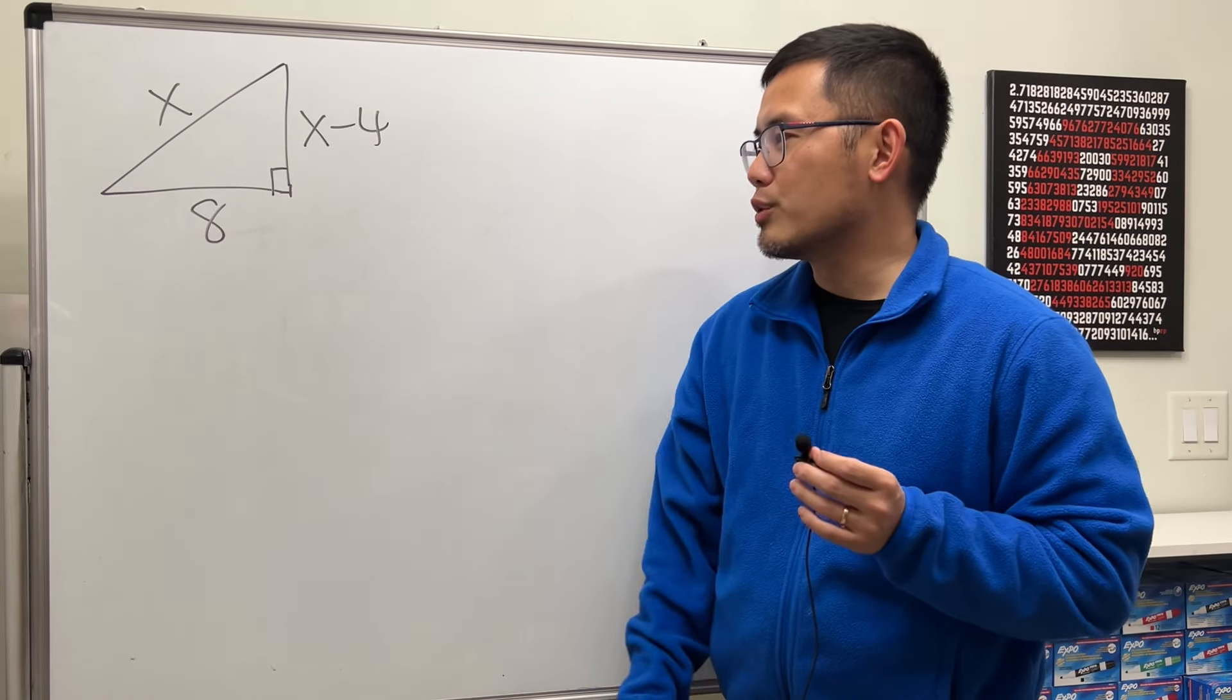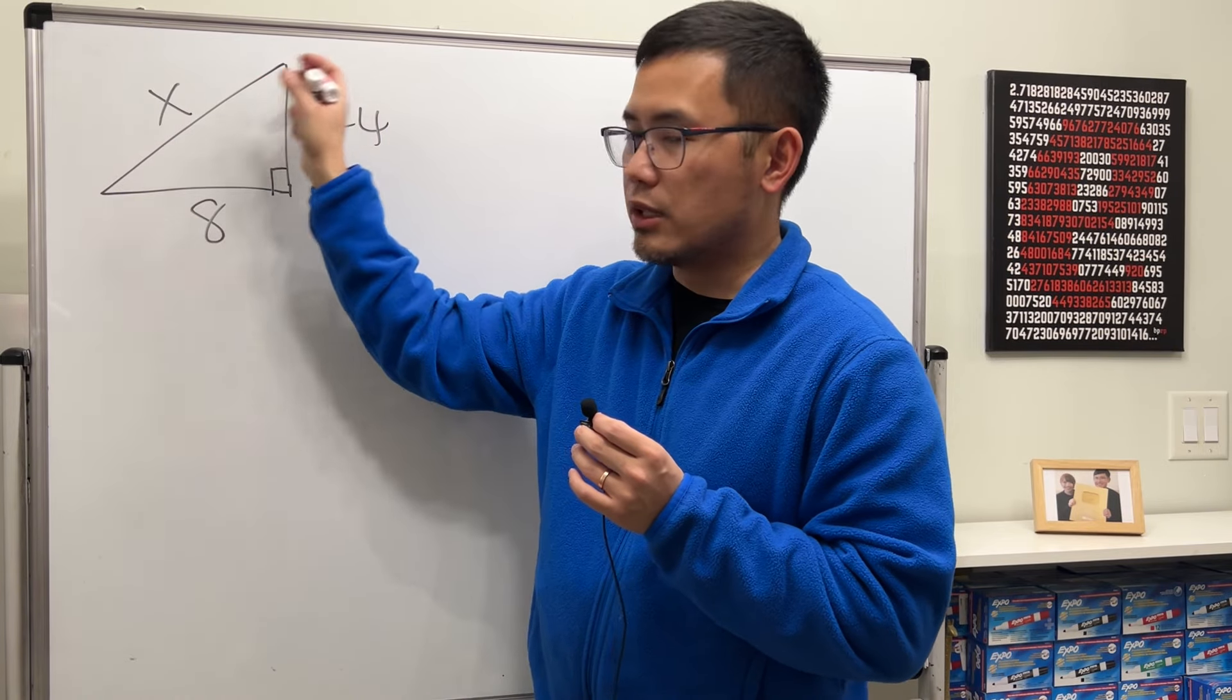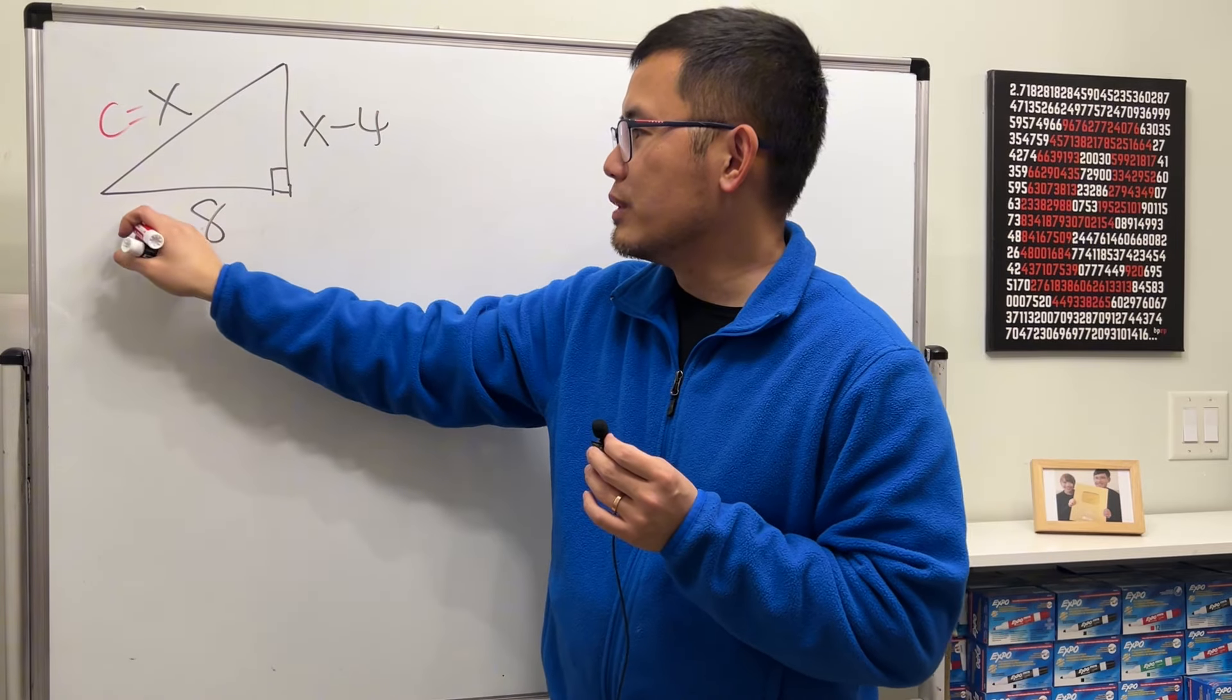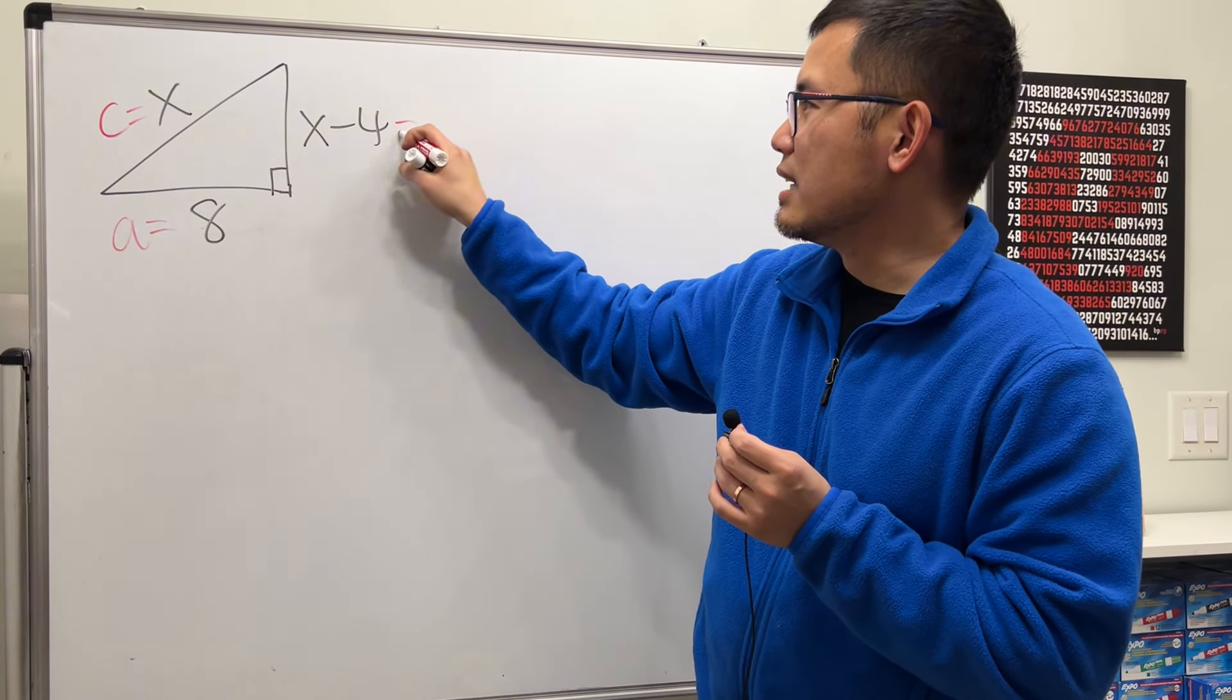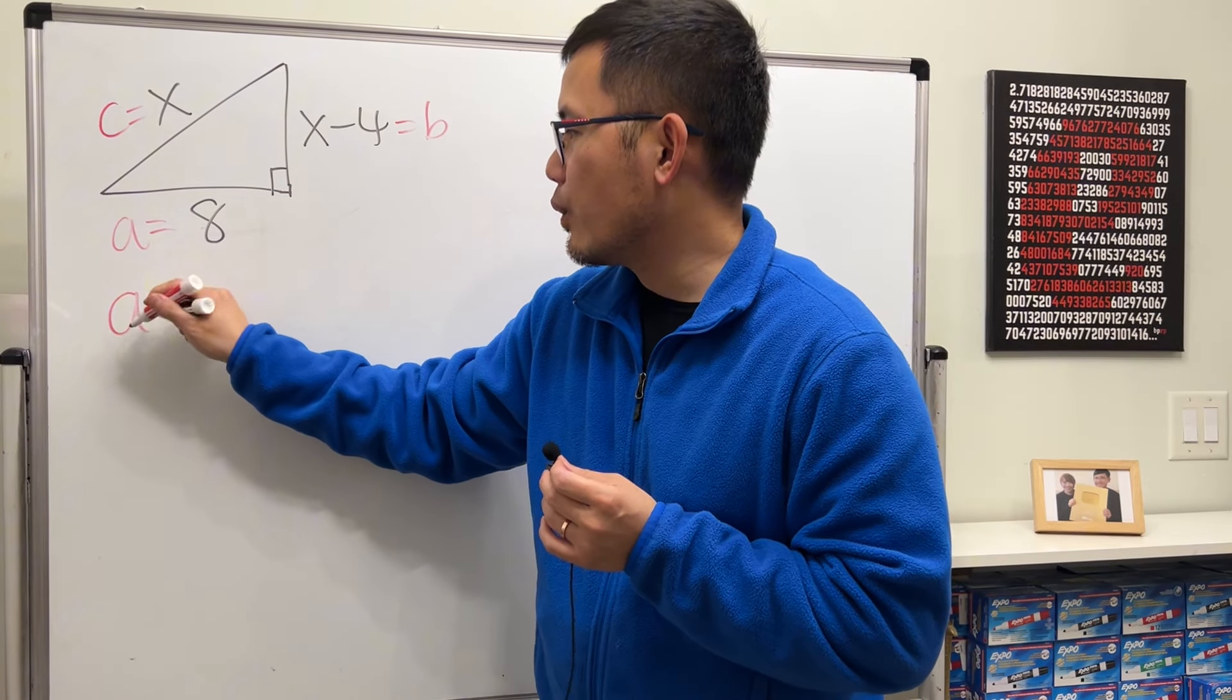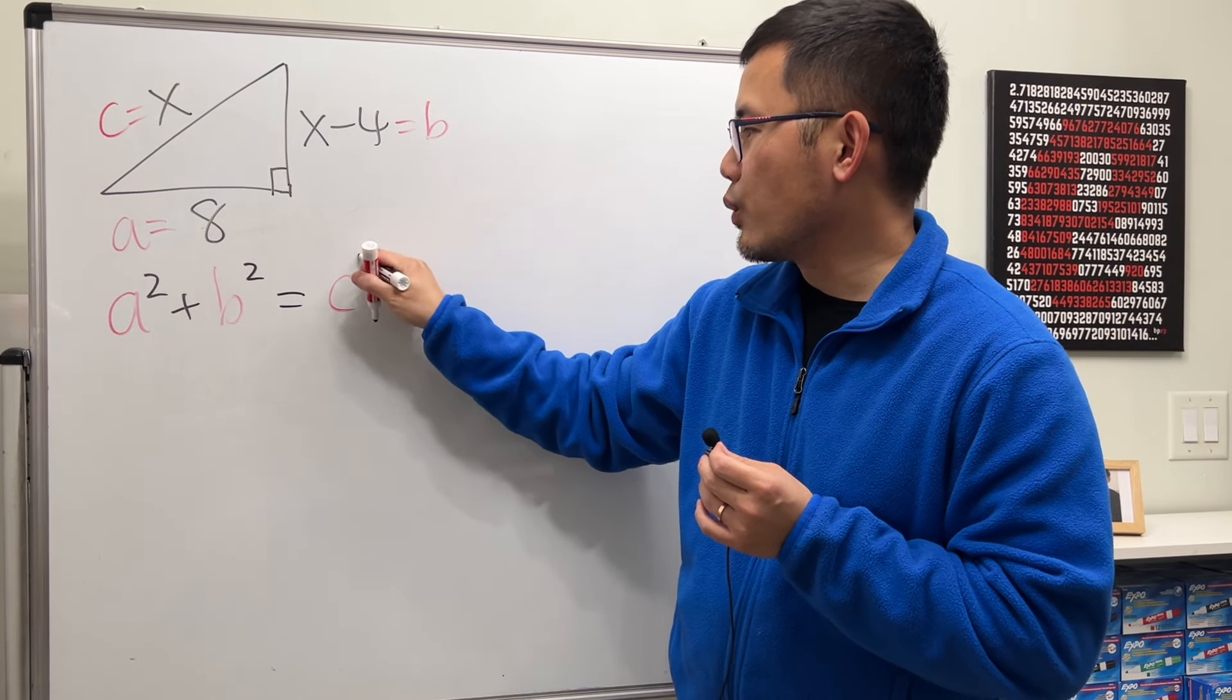Alright, Pythagorean theorem, right? Remember, to label this, the hypotenuse, which is the longest side, that has to be c. And for the other side, you can label this as a, and you can label this as b. And the Pythagorean theorem says, we have a-squared plus b-squared equals c-squared.